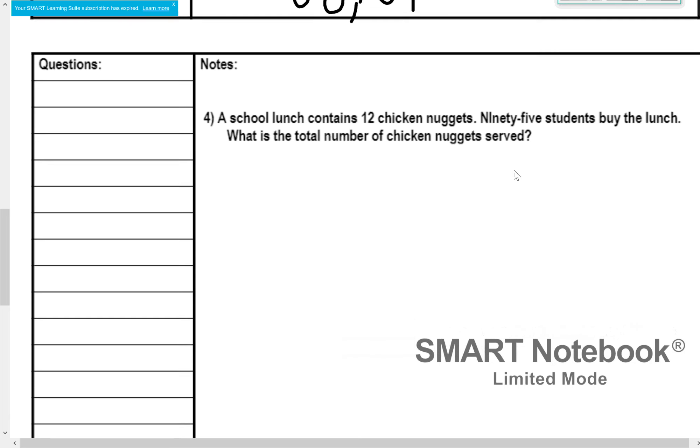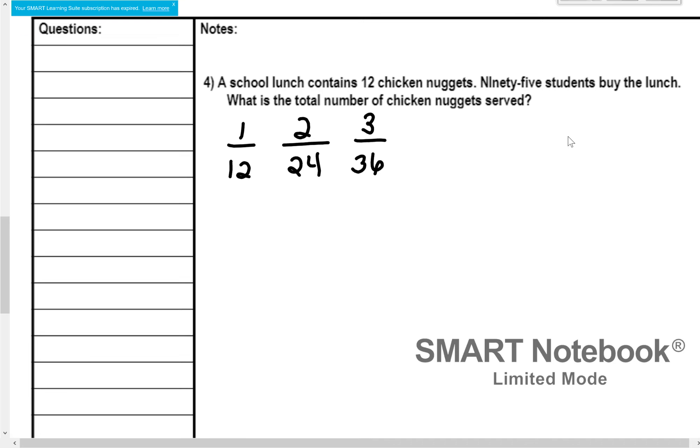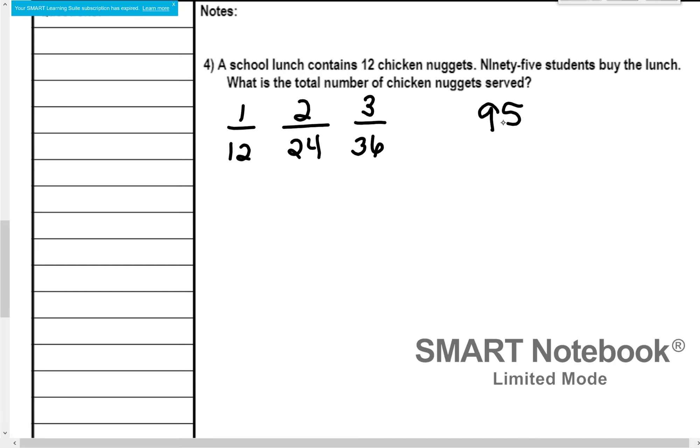Down below we have a word problem. A school lunch contains 12 chicken nuggets. 95 students buy the lunch. What is the total number of chicken nuggets served? Okay, so if one student buys the lunch, they get served 12. If two students buy the lunch, they get served 24 total. If three students buy the lunch, they get served 36 total because it's 12 for each student. So if there's 12 for each student, and there's 95 students, this is going to be a multiplication problem of 95 times 12. So it's just going to be 12 plus 12 plus 12 plus 12, 95 times. And we don't want to have to do that 95 times, which is why we would use multiplication.